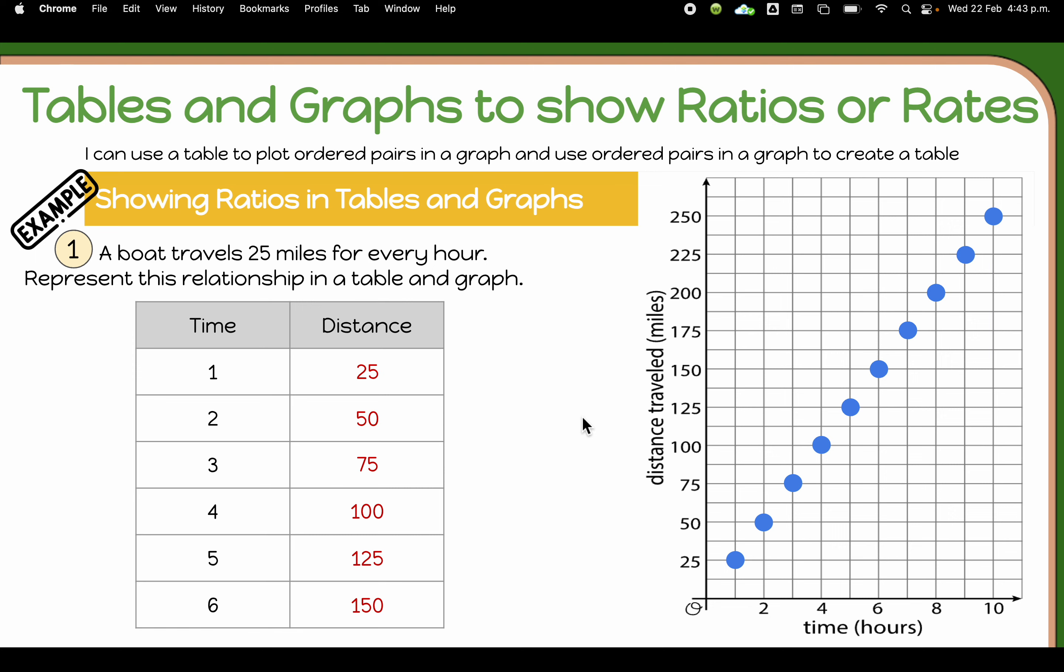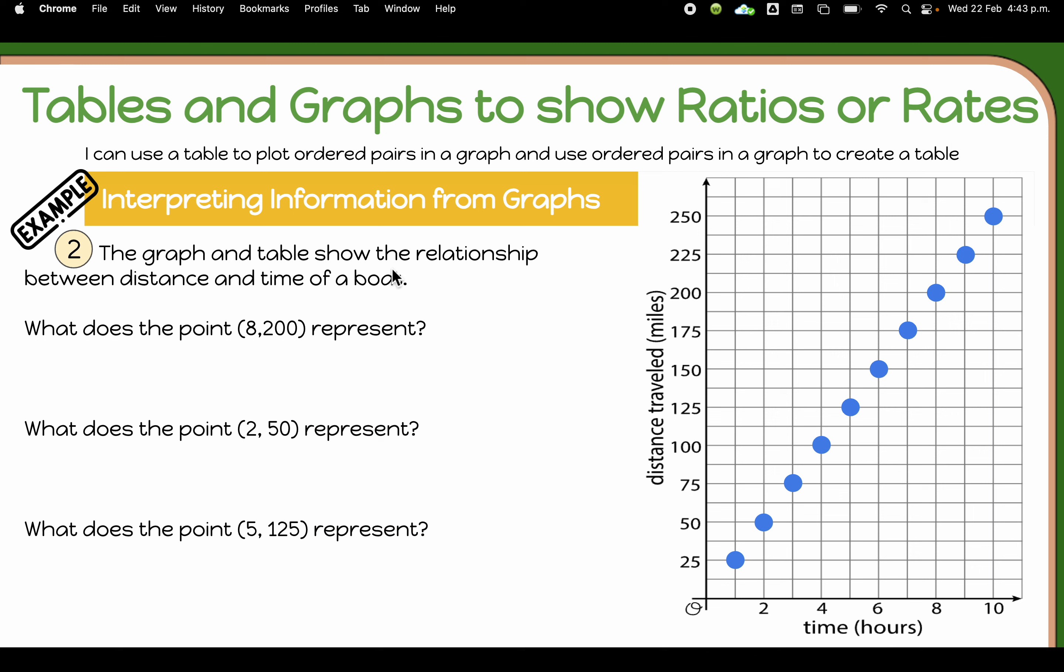So now let's take a look at our second part of this question. From our graph and our table, we could see that there was this relationship of the distance and the time for this boat. All of these points represent something. So for example, what does the point 8,200 represent?